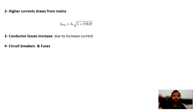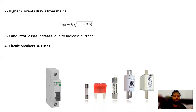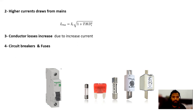Due to the high initial inrush current, circuit breakers will be tripping. If there is a fuse in the circuit, it will be blown away.